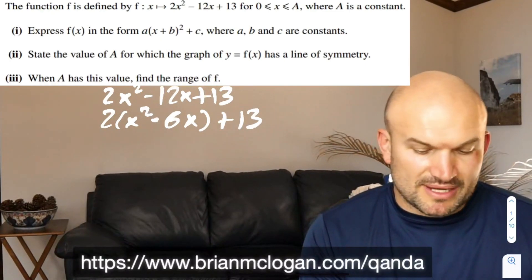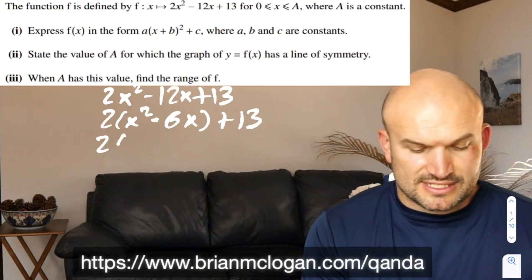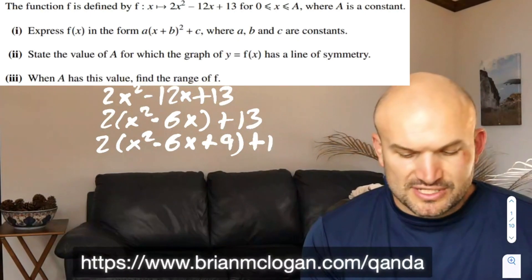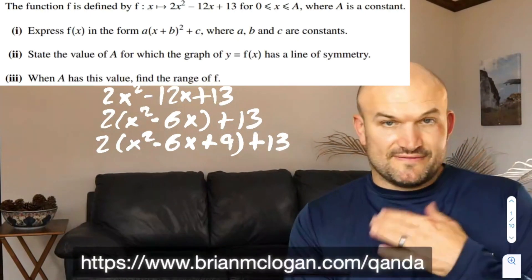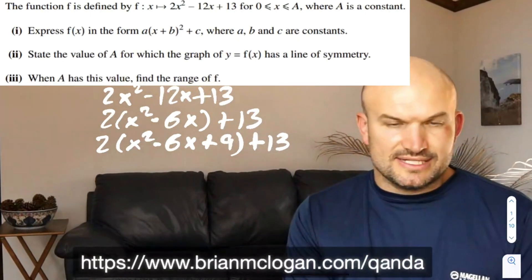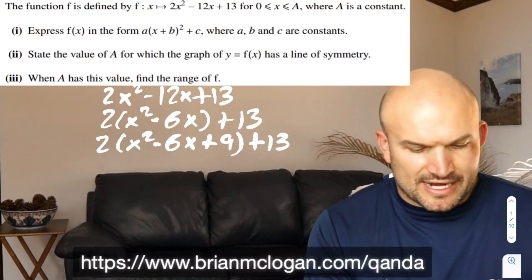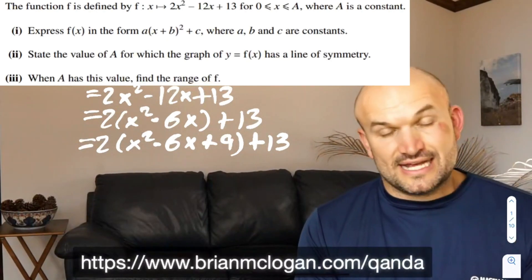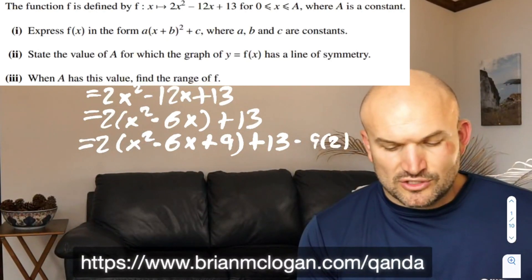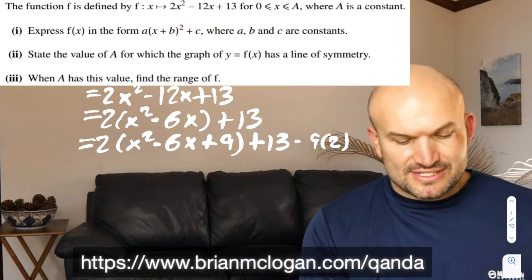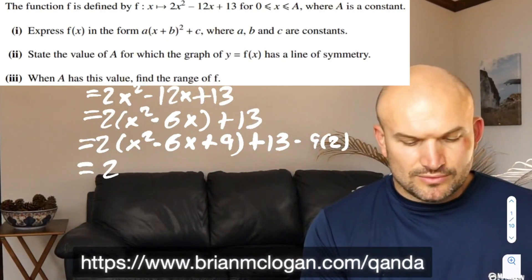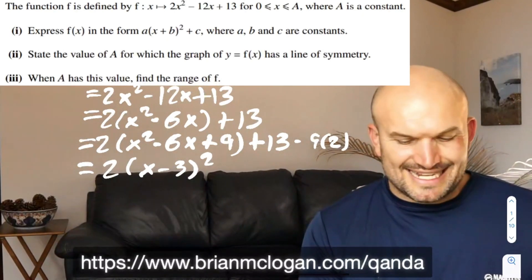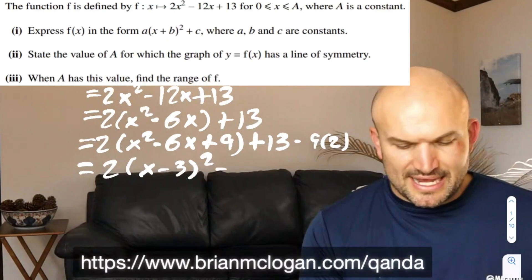Completing the square, I'm going to take my middle term, divide it by 2 and square it. So that's going to give me x squared minus 6x plus 9 plus 13. Now it's very important to recognize if I'm adding 9 inside the parentheses, I can't randomly add a 9 on the side of the equation. I'm going to subtract a 9 that's also being multiplied by 2. That's going to allow me to rewrite this as 2 times (x minus 3) squared, and 9 times 2 is 18 plus 13, that's negative 5.